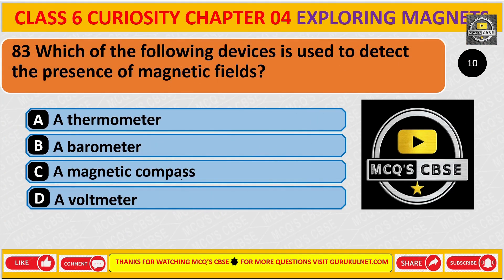Which of the following devices is used to detect the presence of a magnetic field? The correct answer is C. A magnetic compass.